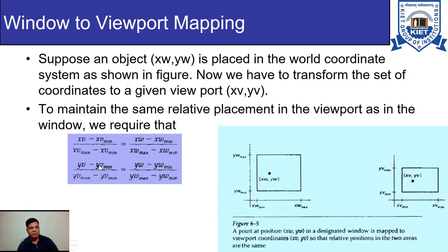We are mapping window to viewport. Suppose we have an object whose coordinates are (xw, yw) as shown in the figure, placed on the world coordinate system. We want to transform these coordinates to the viewport, that is, transform (xw, yw) to (xv, yv) on device coordinates. To maintain the same relative placement in the viewport as in the window, we require that (xv − xv_min) / (xv_max − xv_min) = (xw − xw_min) / (xw_max − xw_min) along the x-axis.